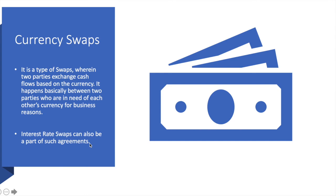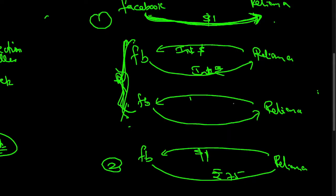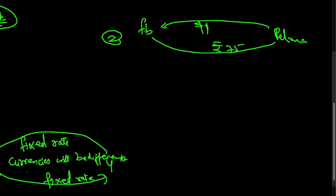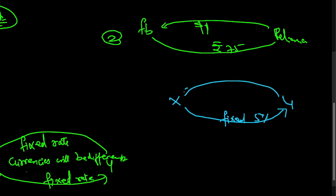Currency swaps involve two parties exchanging cash flows based on currency, typically between parties who need each other's currency for business reasons, with interest rate swaps forming part of the agreement. Finally, equity return swaps — also called equity swaps. X pays a fixed rate of, say, 5%, and in return Y pays the return of an equity index such as Nifty or a specific company like Apple. If Apple's return is 7%, X gains because he receives 7% but pays only 5%.